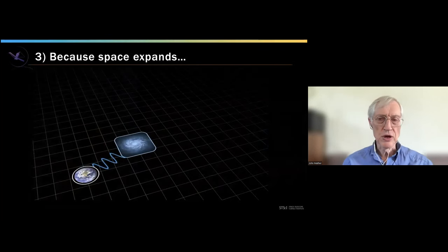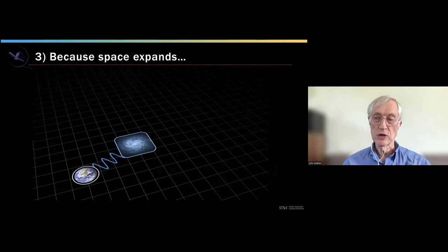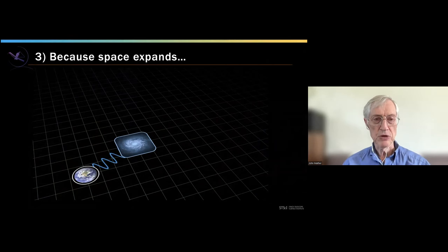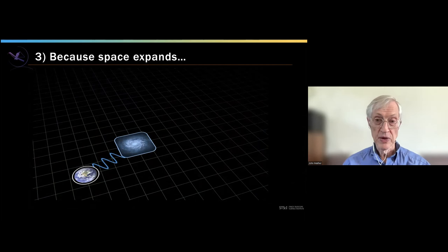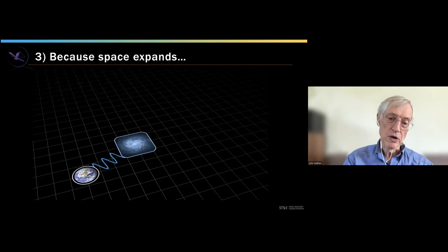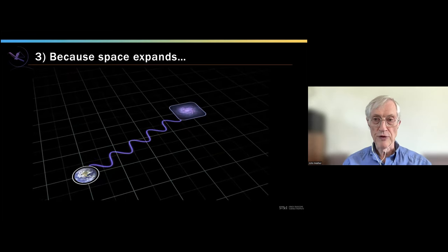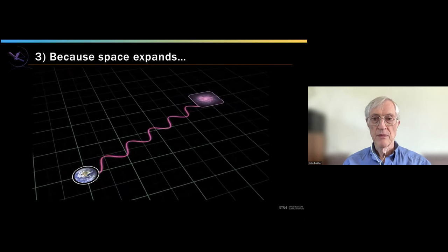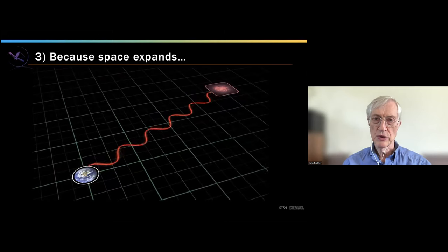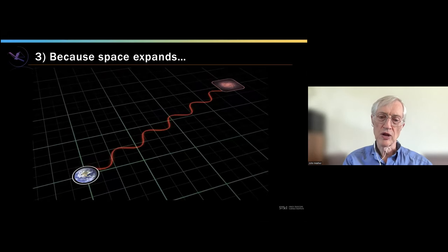The third reason to study infrared light is that the universe is expanding, and we see distant galaxies running away from us at enormous speeds, giving what we call the Doppler shift — another way of describing this is that space itself is expanding. Because distant objects are going away from us at great speeds, we need an infrared telescope to pick up light that started off at visible or ultraviolet wavelengths. Build an infrared telescope to do ultraviolet astronomy in the early universe.